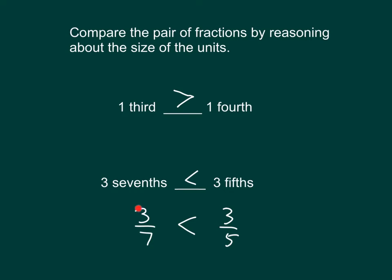We also know that three-sevenths is less than a half, while three-fifths is more than a half. We're reasoning about the size of those units. Sevenths are already smaller than fifths, and the number of units that we're looking at is the same.